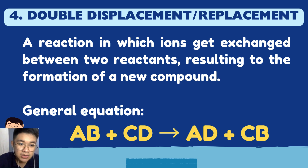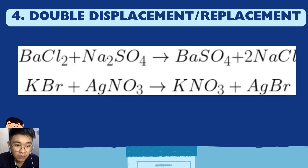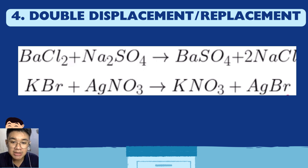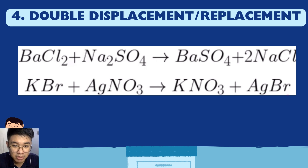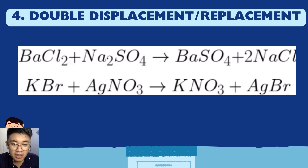Example: BaCl2 (barium chloride) + Na2SO4 (sodium sulfate) → BaSO4 (barium sulfate) + NaCl (sodium chloride). On the reactant side, barium's partner is chlorine. On the product side, barium's new partner is sulfate (SO4), and chlorine's new partner is sodium. They exchanged partners — that's double displacement.